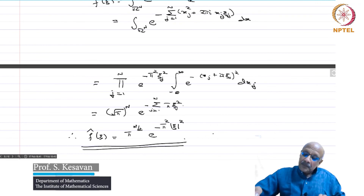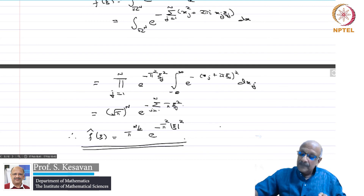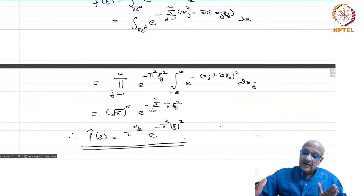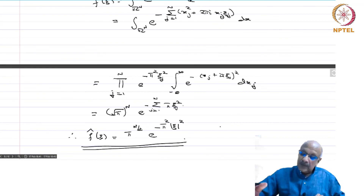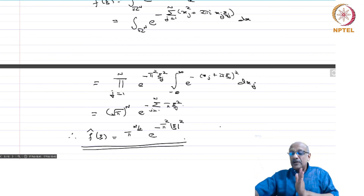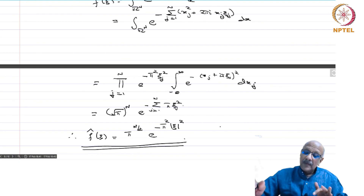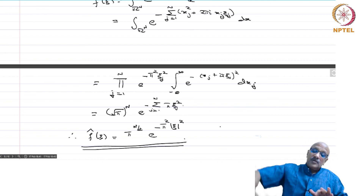The Fourier transform maps L1 into L∞. We want to identify a function space that is stable under the Fourier transform — meaning if a function belongs to the space, its Fourier transform also belongs to the space. Once we identify such a space, we will see that we can extend the definition of the Fourier transform to certain classes of distributions.